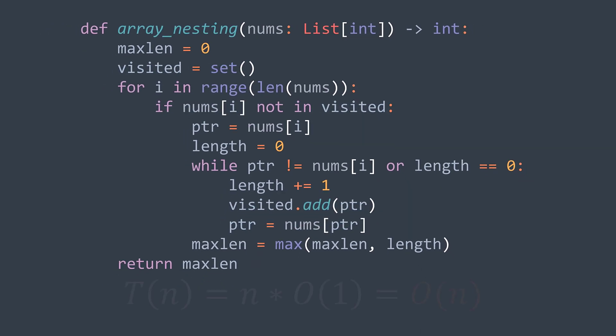By doing so, we get an O(n) time complexity because each element is traversed at most twice during the process. And for the space complexity, we have O(n) because of the visited set.